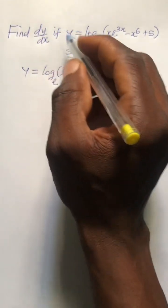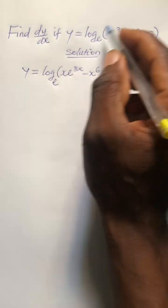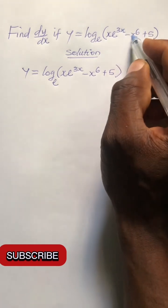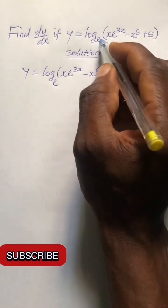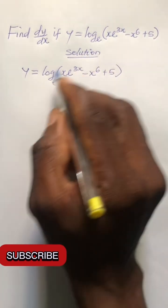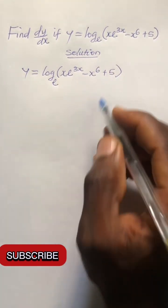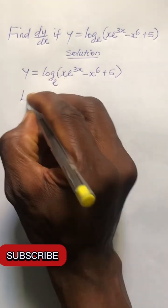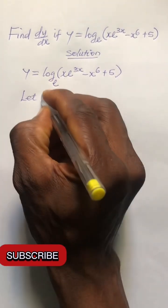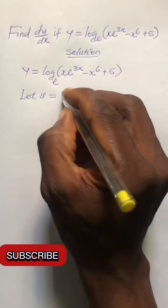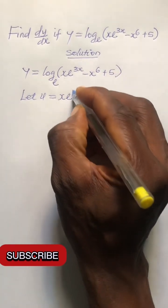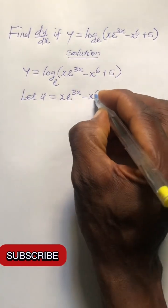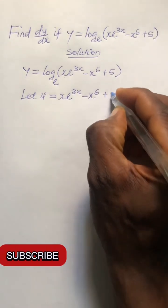Find dy/dx if y equals log of the bracket x times e^(3x) minus x^6 plus 5, in base e. This is a logarithmic differentiation, so we let u equal everything in the bracket, which is x times e^(3x) minus x^6 plus 5.